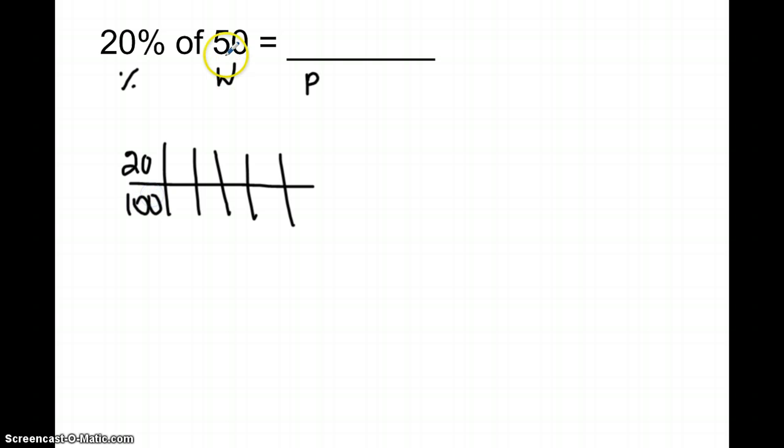And so I go back to my number sentence, and the only number I have left is 50. Well, 50 is recognized as the whole, which goes along with 100, so I'm going to put 50 on the bottom.